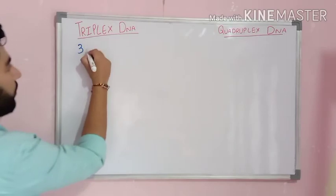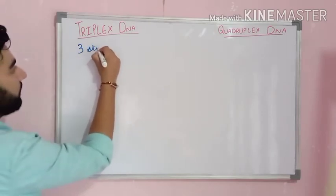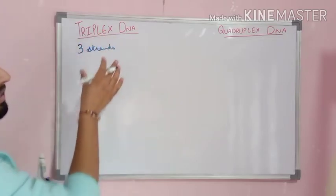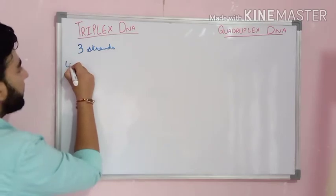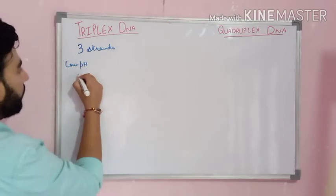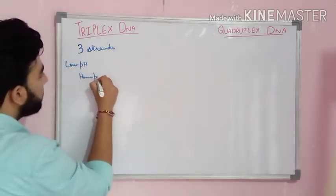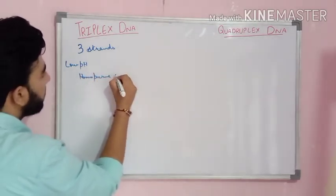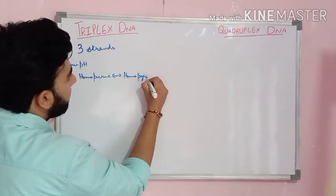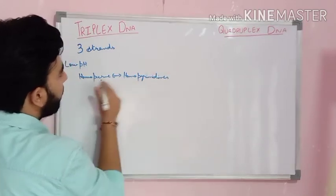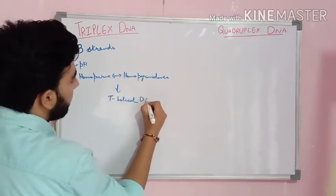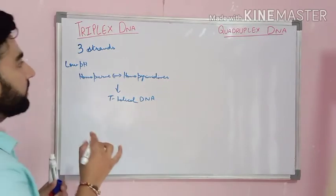Triple helical DNA consists of three strands of DNA. When this triple helical DNA forms, it occurs during the low pH in the cell, where homopurines combine with homopyrimidines to give rise to the triple helical DNA.